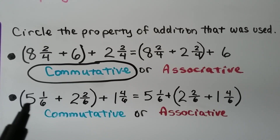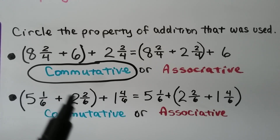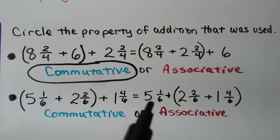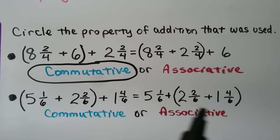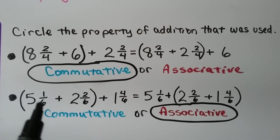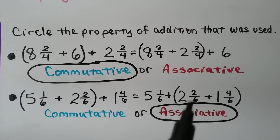Now for this one: we have 5 and 1 sixth plus 2 and 2 sixths in parentheses, with 1 and 4 sixths on the outside. Then the 5 and 1 sixth is on the outside, and 2 and 2 sixths plus 1 and 4 sixths is inside the parentheses. Was it the commutative property that changed the order, or the associative property that moved the parentheses? If you said associative, you're right — the addends are still in the same order; the parentheses were moved.